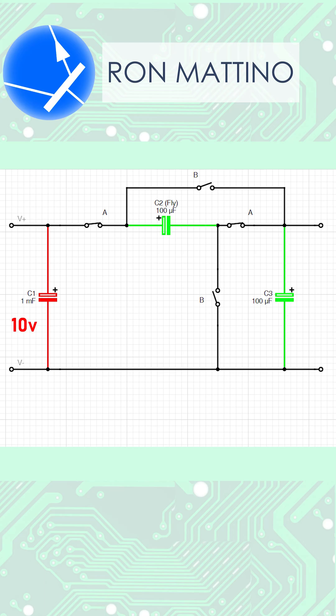The circuit has only two states. During phase A, A switches are engaged and B switches are open. During phase B, B switches are engaged and A switches are open.